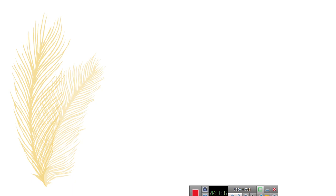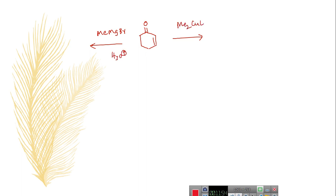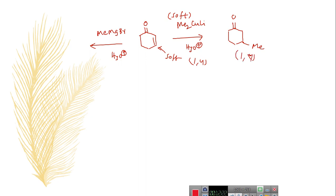Let us consider an example. If you take cyclohexenone and treat with methylmagnesium bromide followed by hydrolysis, you get the 1,2 addition product. If you treat with Gilman's reagent, dimethyl lithium cuprate, followed by hydrolysis, the methyl connected to copper is a soft nucleophile, so it preferably attacks the soft electrophile in 1,4 manner and gives you the 1,4 addition product.